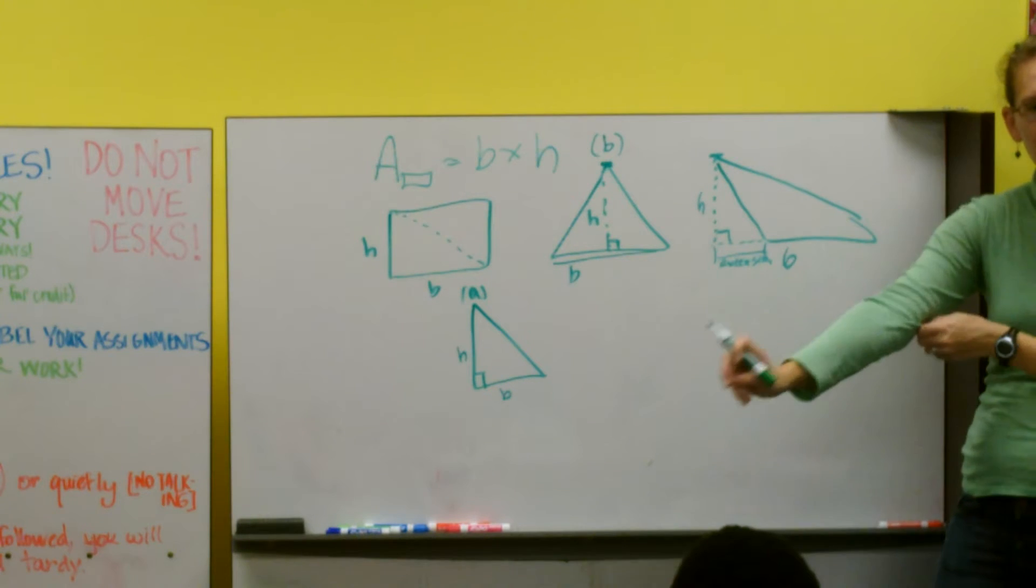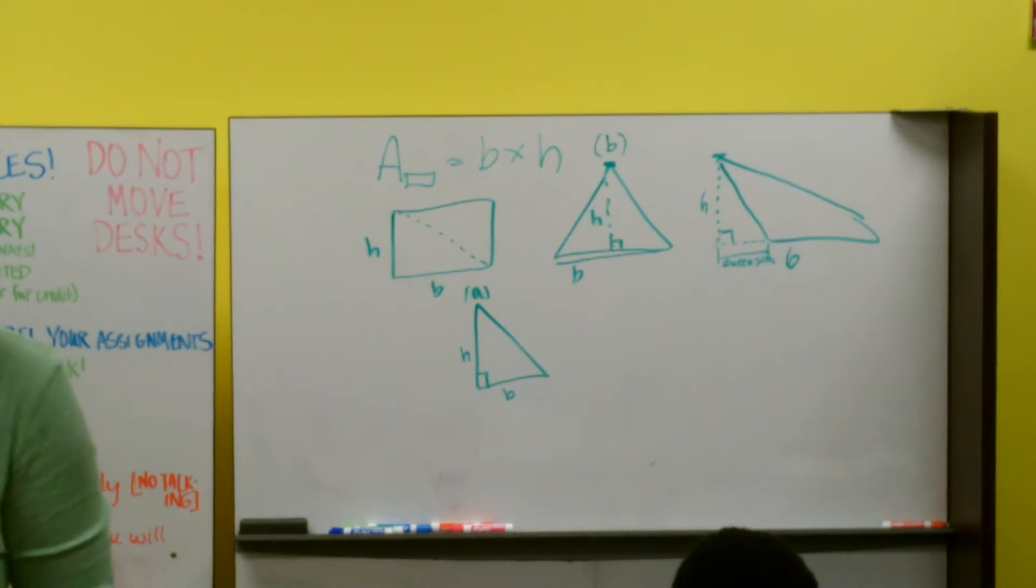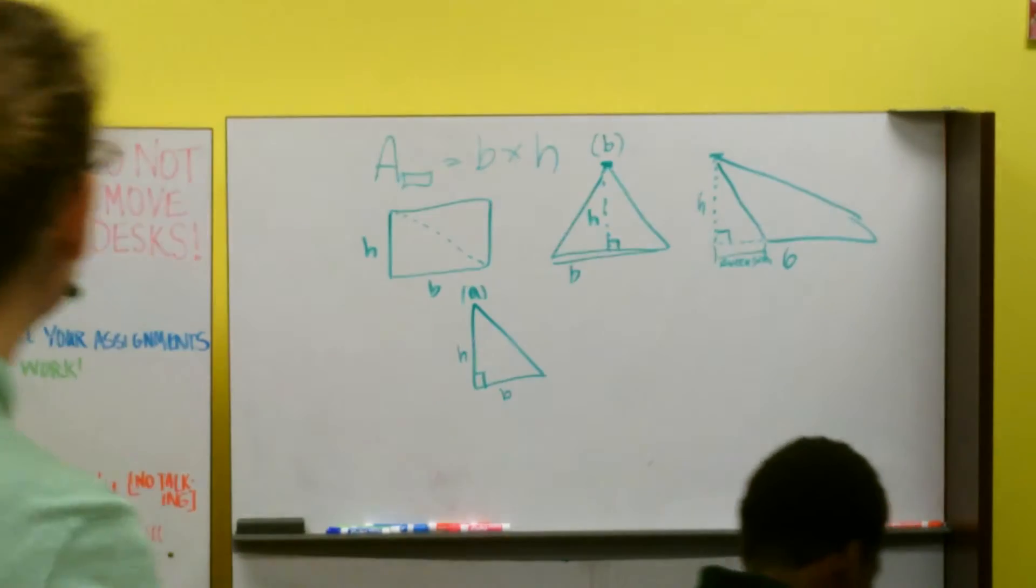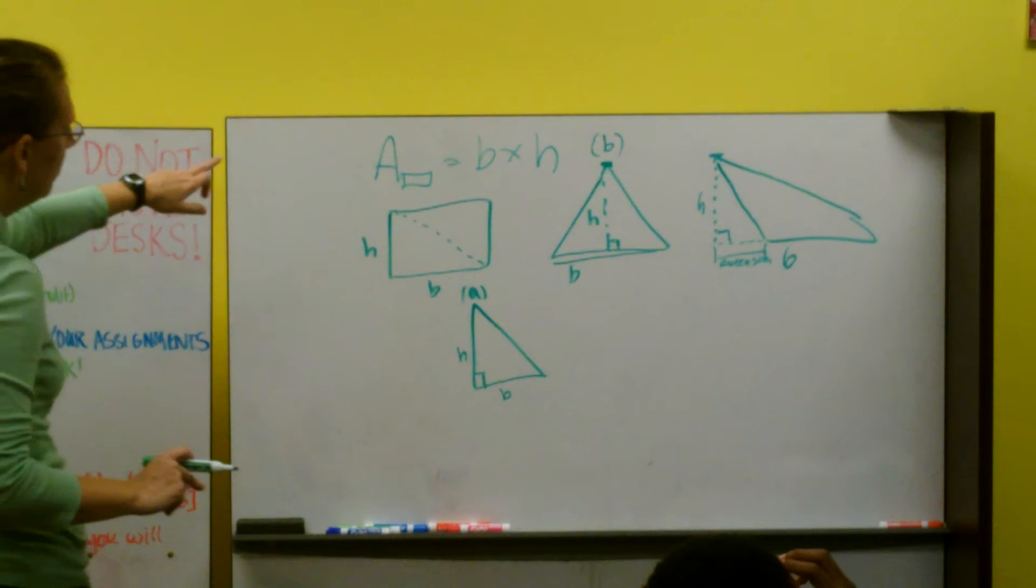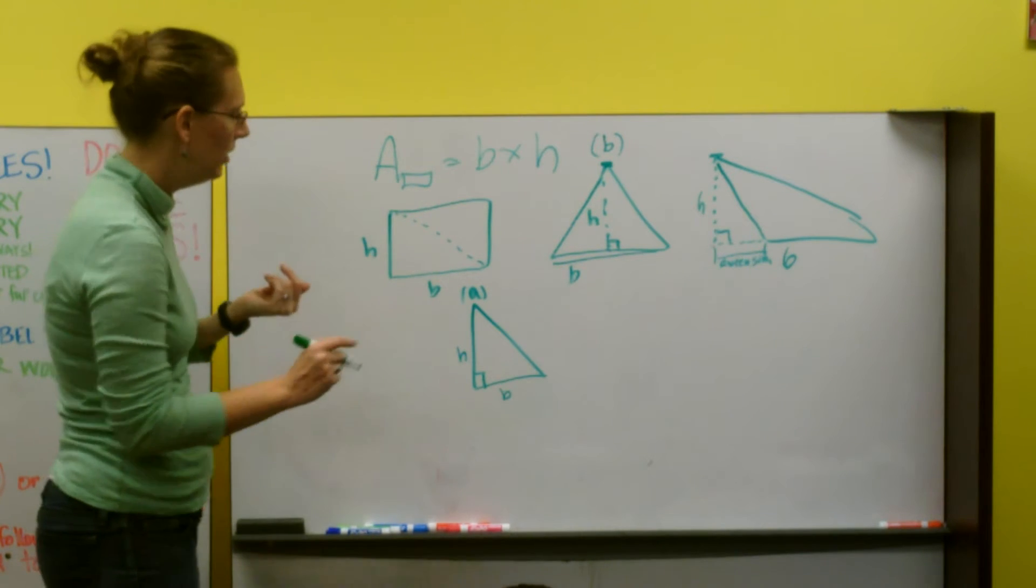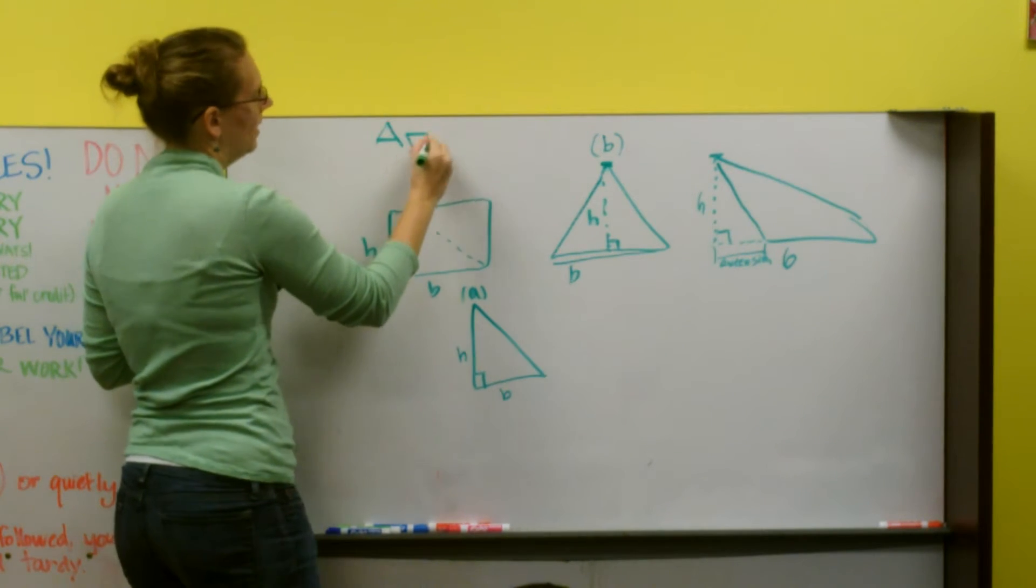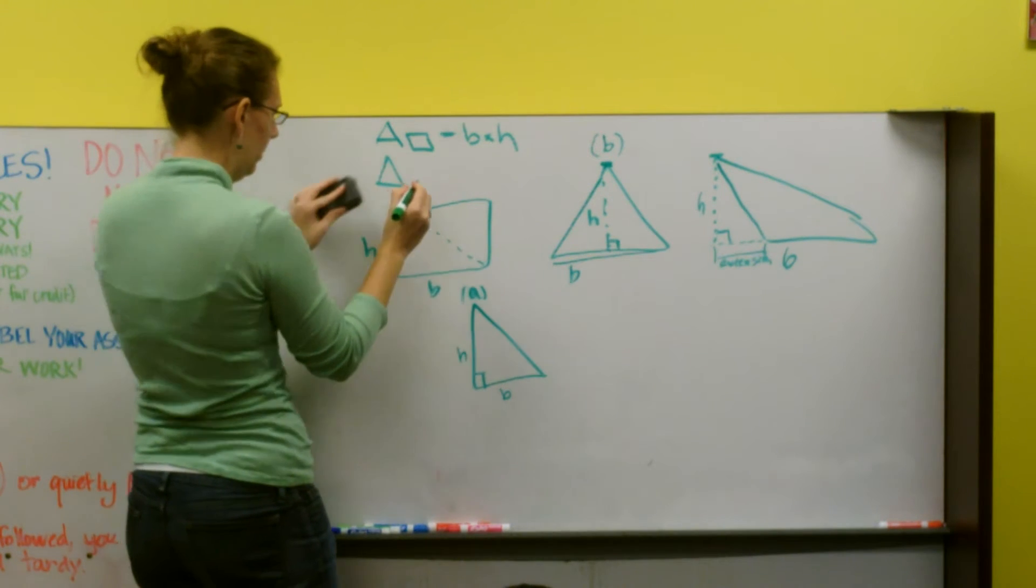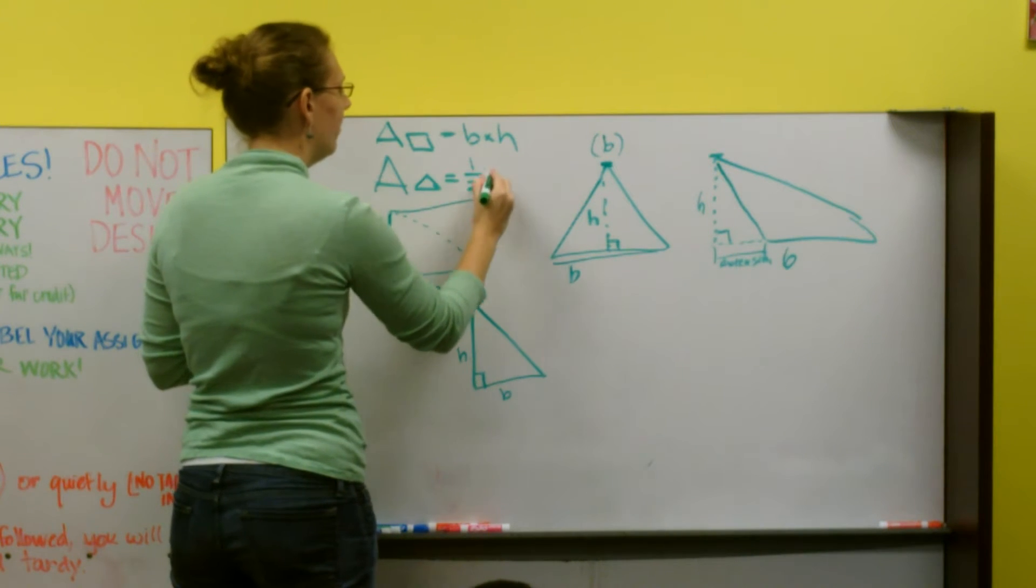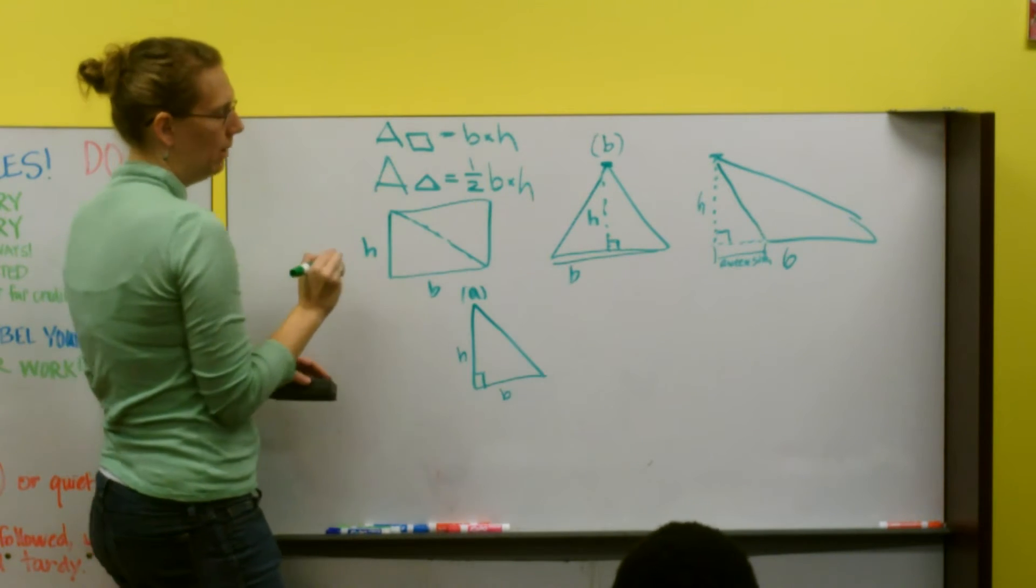So when we take the area of the triangle, we've got our area of a rectangle equals base times height. So Tomika, what is the area of a triangle? What's our formula for area of a triangle? Area of a rectangle equals base times height. Area of a triangle is one half of a base times the height. If you look at this one, we just cut it in half. So that's where this half comes from.